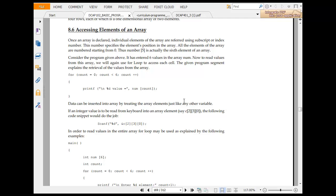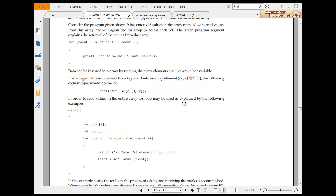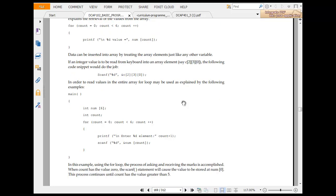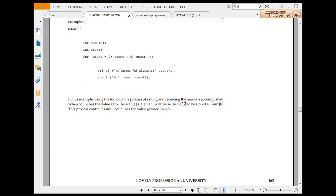Consider the program given below. The sixth value is array number. Now to read the values from this array, we will again use loop to access all the given program segments. Then you have count equal to zero. Count is less than 6, count plus plus. So printf slash n %d value is equal to num count. Data can be inserted into array by treating the array element just like any other variable.